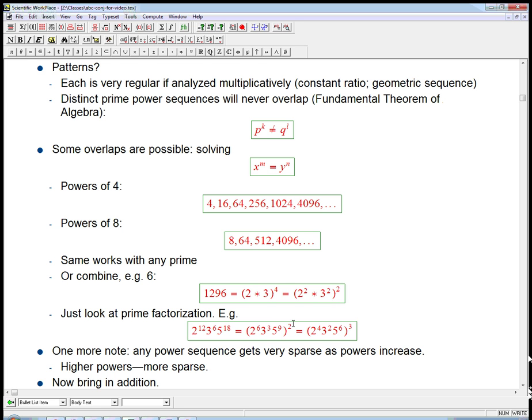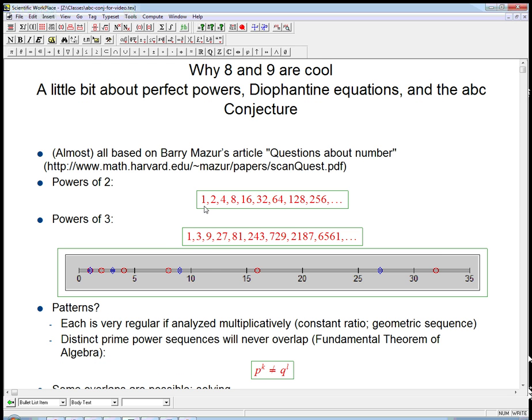One thing to note, as I mentioned just briefly a minute ago, if you look at any power sequence, any perfect power sequence, it gets very, very sparse as the powers increase. If you look at a particular prime power sequence, 1, 2, 4, 8, 16, they're kind of clustered here, but then they get pretty wide. It's just the fact that powers are exponential growth, they grow fast, and so the gaps get bigger.